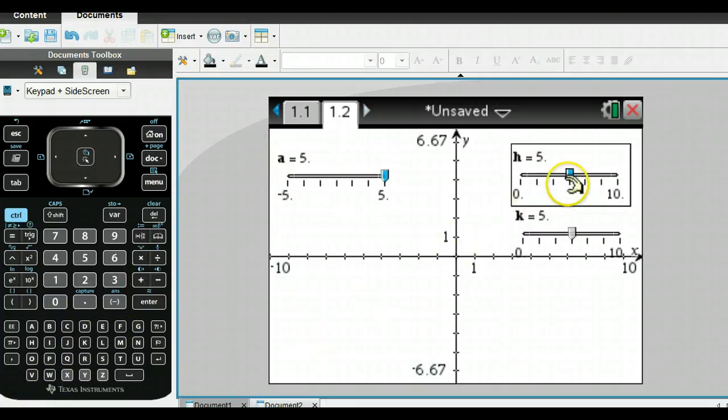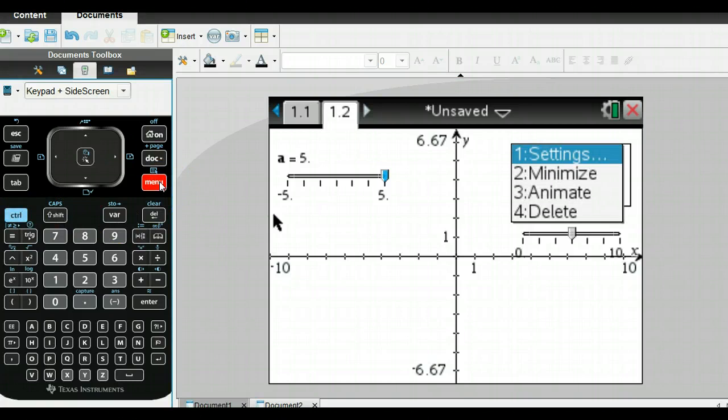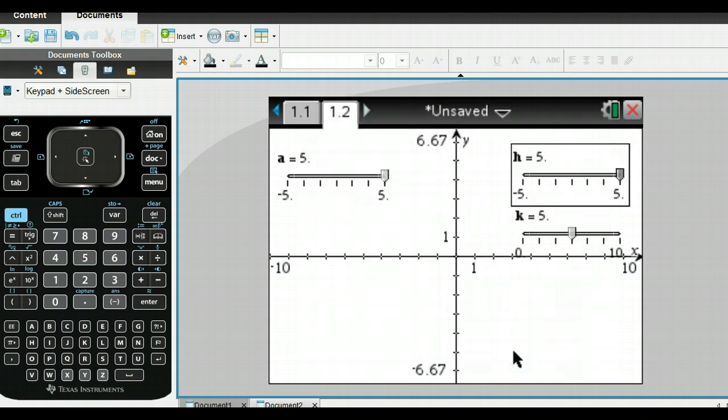If you want to change the scale on these, I was doing a right click, but I can't do that on the calculator. So you go Control Menu, and then you can go to the Settings. Here's where you can change all the information that you need to change with the calculator itself.